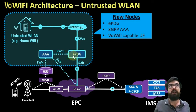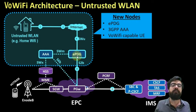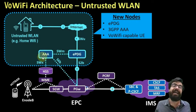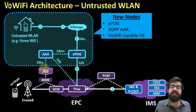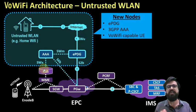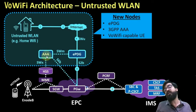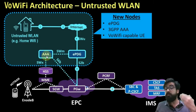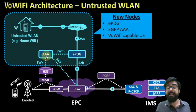EPDG — we can consider that as a gateway to the world outside; it is the Evolved Packet Data Gateway. It sends the message towards the AAA and acts like a proxy server, then sends it towards the HSS. The HSS does the identification and authentication and sends the result back to the AAA, which caches the information and stores it for future requests to decrease latency, then sends it towards the EPDG.